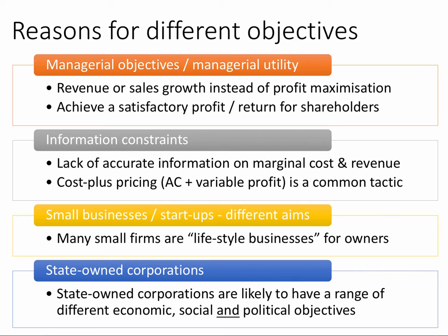A second key reason why objectives differ is that firms may not have the information they need — they may not know their marginal costs or marginal revenues accurately. A lot of firms in the real world operate cost-plus pricing: they work out their average cost and add a variable profit margin, say five or ten percent, depending on the elasticity of demand. Many small firms aren't profit maximisers; they're focused on survival or earning enough to pay for the lifestyle of their owners. State-owned corporations like Network Rail are also likely to have a range of different objectives.